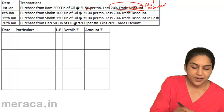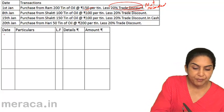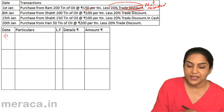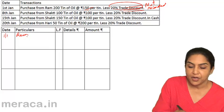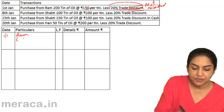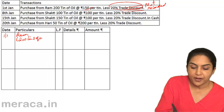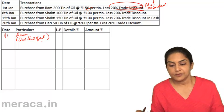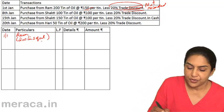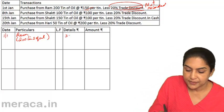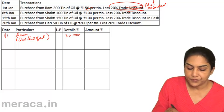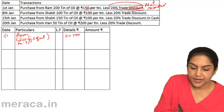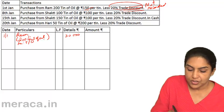So how do we record this? We put the date here — 1st January — we write the particulars, which is basically purchased from Ram. Then we write 200 tins of oil. We write 30,000 less trade discount of 20%.